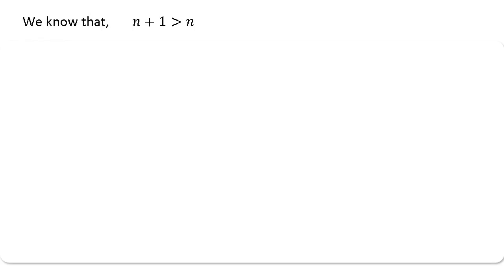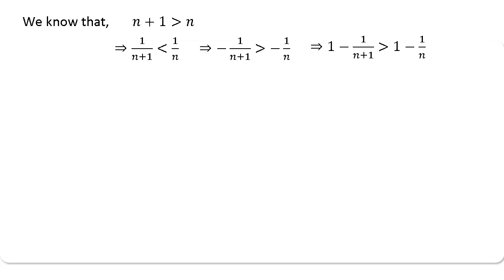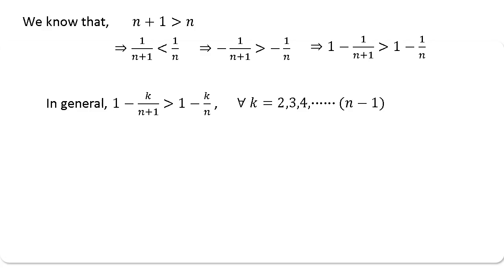Now, we know that n+1 is greater than n for any natural number n. If you take the reciprocal on both sides, the inequality reverses: 1/(n+1) < 1/n. If you take the negative sign on both sides, the inequality reverses again: 1 − 1/(n+1) > 1 − 1/n. In general, 1 − k/(n+1) > 1 − k/n.